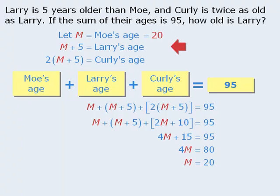Larry's age is equal to m plus 5, so if m equals 20, then Larry must be 25 years old. Finally, Curly's age is equal to 2(m + 5), so if m equals 20, then Curly must be 50 years old. The question asks us to find Larry's age, and we can see that Larry is 25 years old.